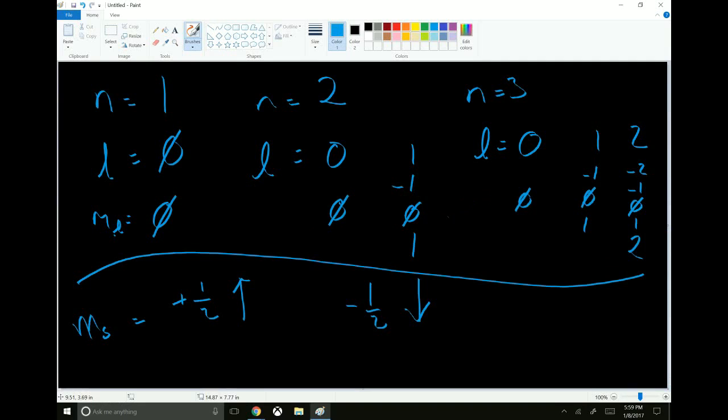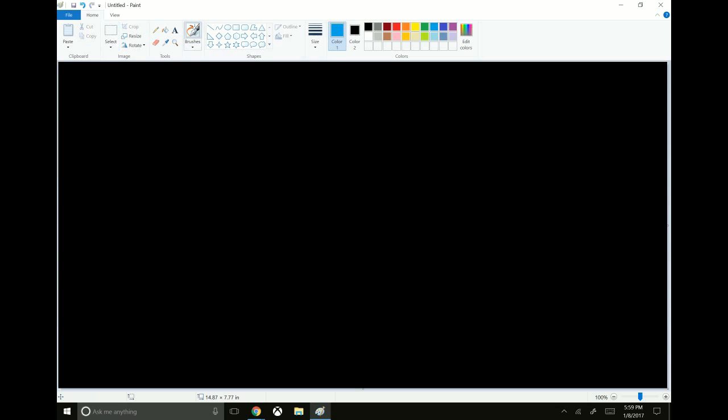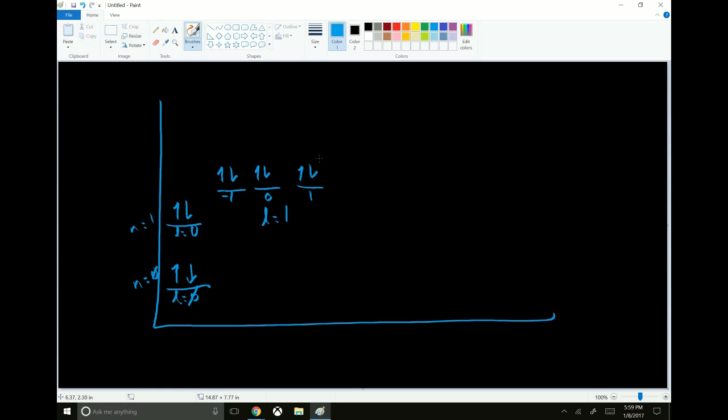So you can think of it like this. If here is n equals zero, L equals zero. You can have one electron spin up, one electron spin down. You can have n equals one. L equals one. Or L equals zero. One spin up, one spin down. L equals one. M sub L equals negative one, zero, and one. And each one of those can hold two electrons. And so on. So that's what we're looking at.